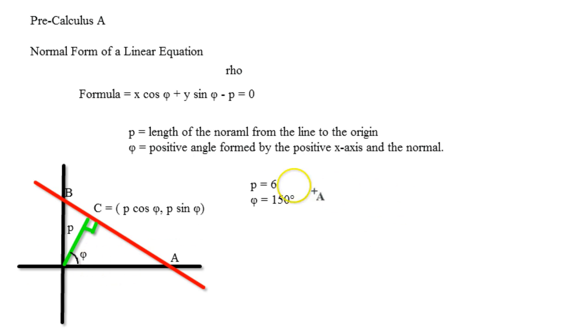Now remember, this is going to be going this way around there, so it's from the positive x-axis, it's from standard position. So we would rewrite it as x cosine of 150 plus y sine of 150 minus 6 equals 0.